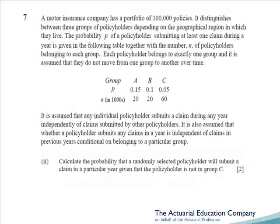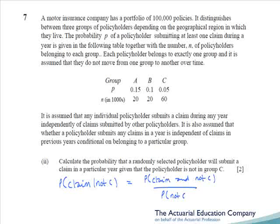For part two, we again calculate the probability that a randomly selected policyholder will submit a claim, but given that the policyholder is not in group C. It's a conditional probability, so we use the conditional formula: probability of claiming and not being in group C, divided by the probability of not being in group C. The denominator is not too hard as there are 40,000 policyholders not in group C out of a total of 100,000, and the numerator follows a similar method to part one.